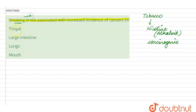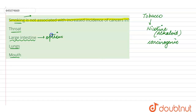When we say smoking, the throat will be affected because the smoke goes into the throat through the mouth and then into the lungs. But the large intestine is the option which is also the correct answer for this question, as smoking will not affect the large intestine.